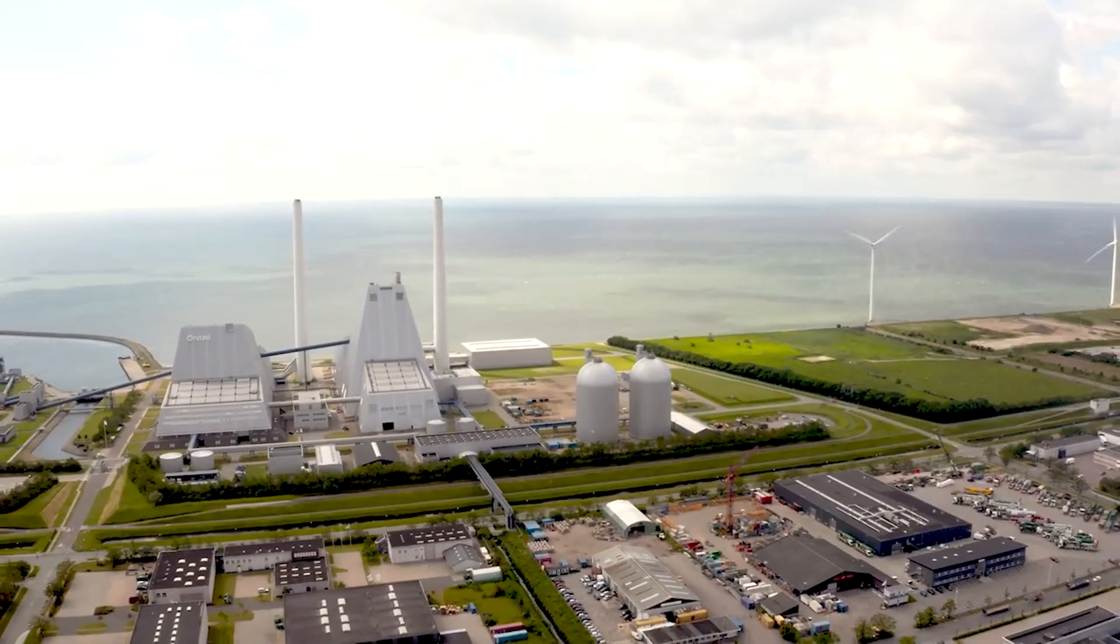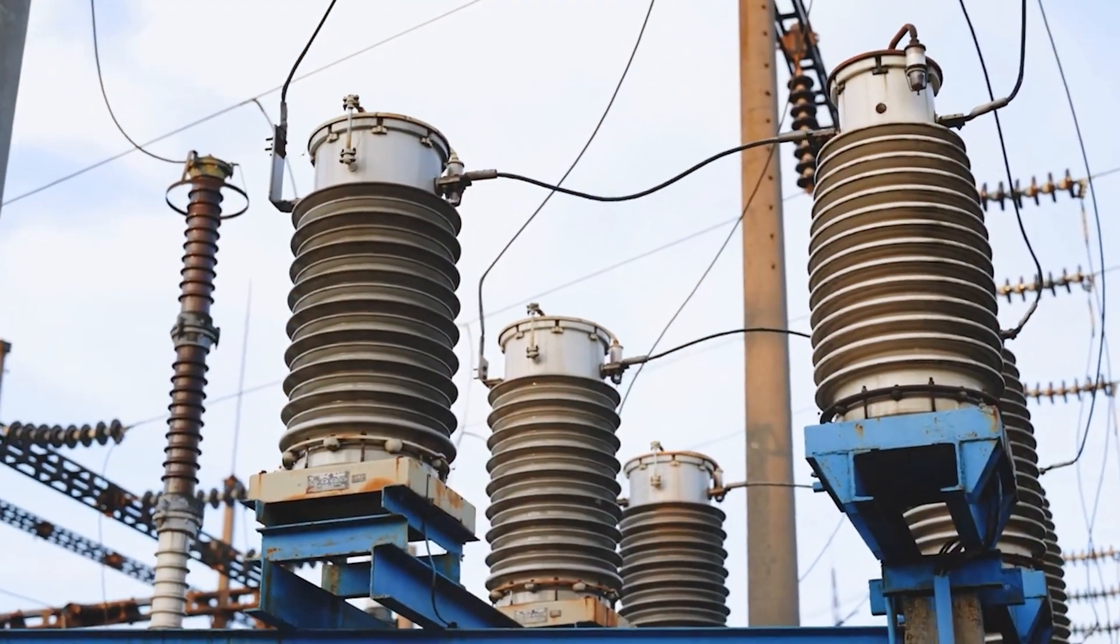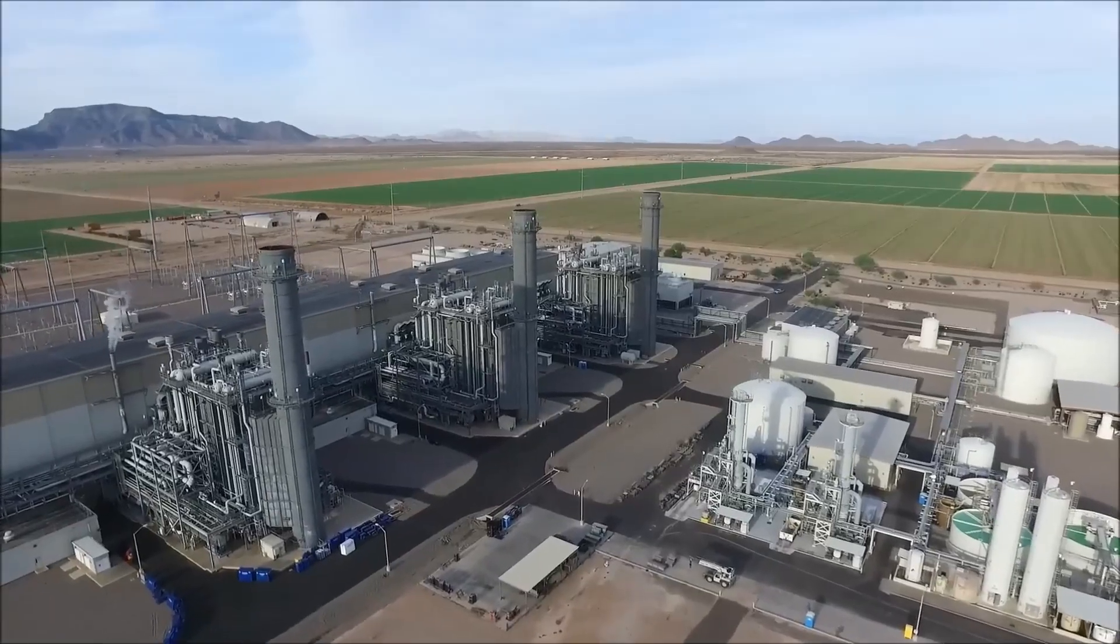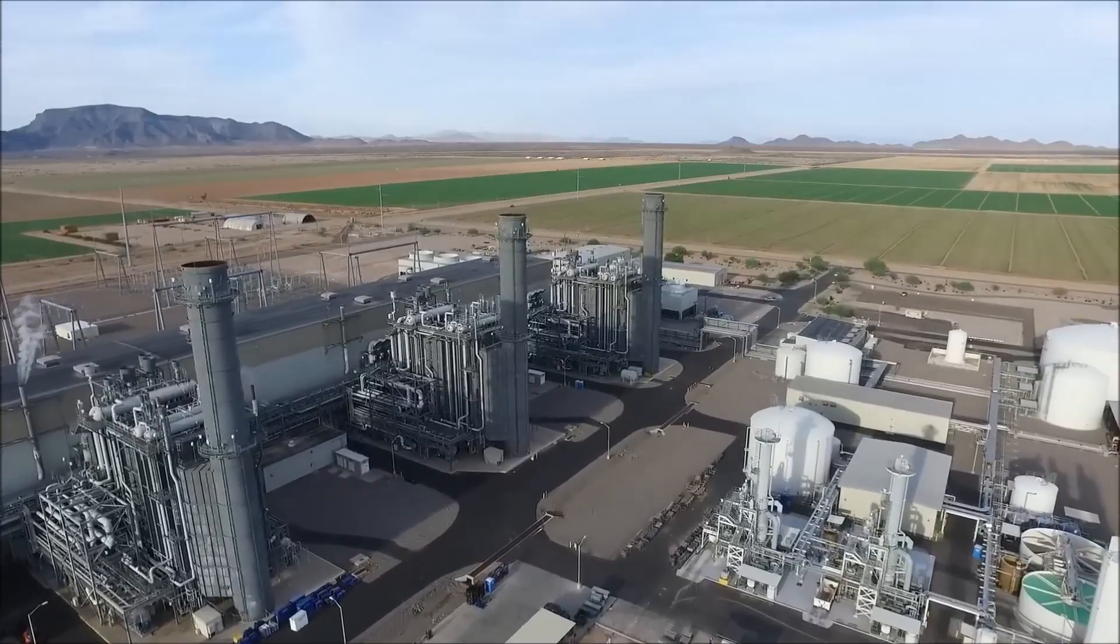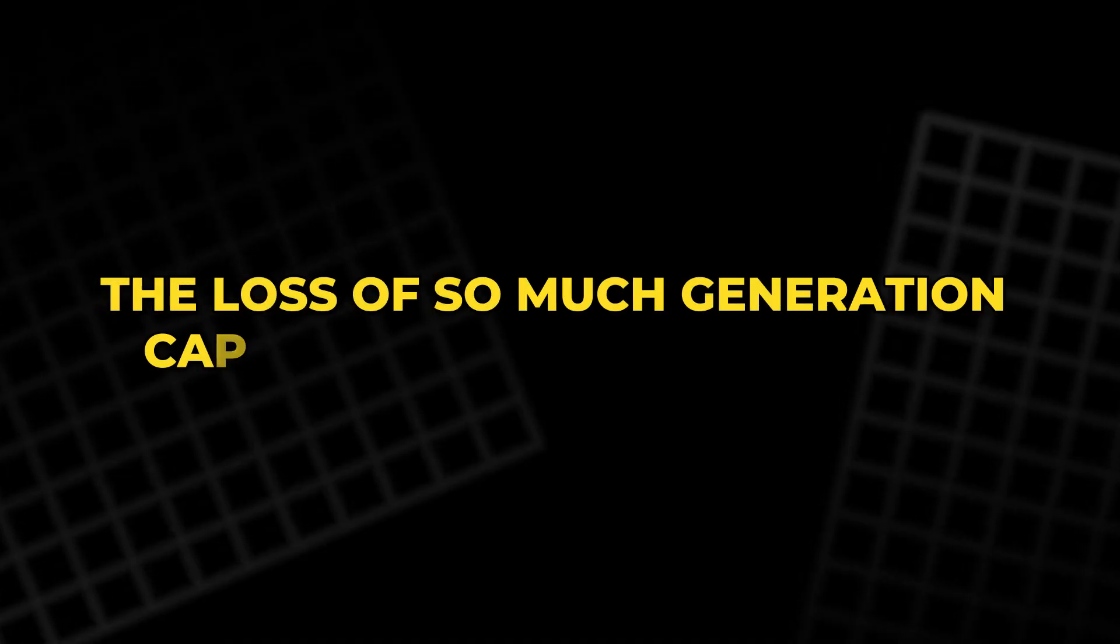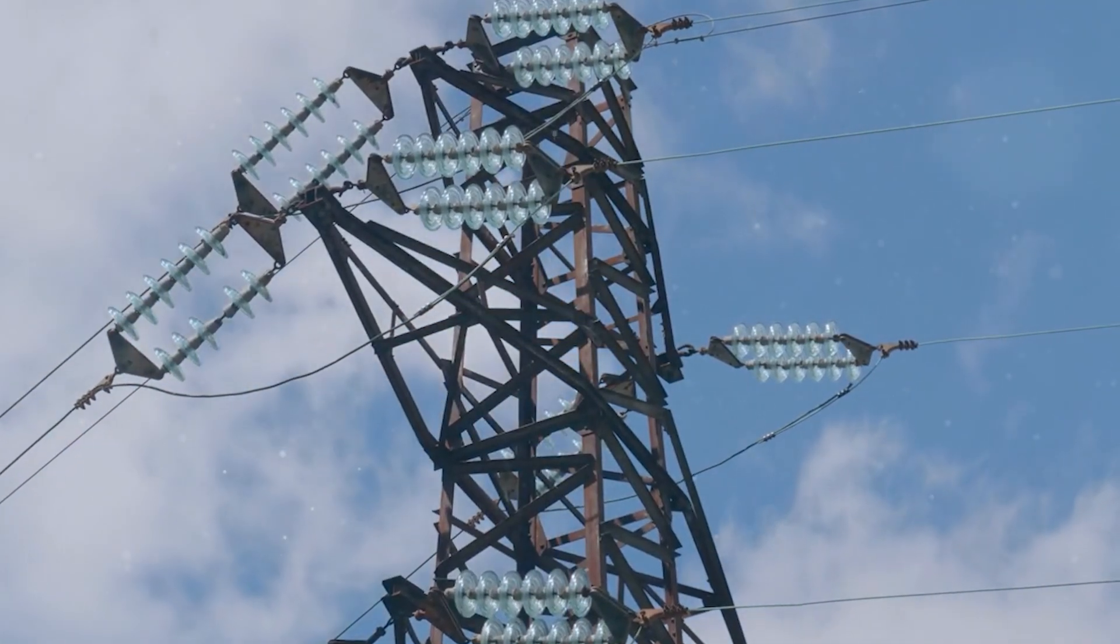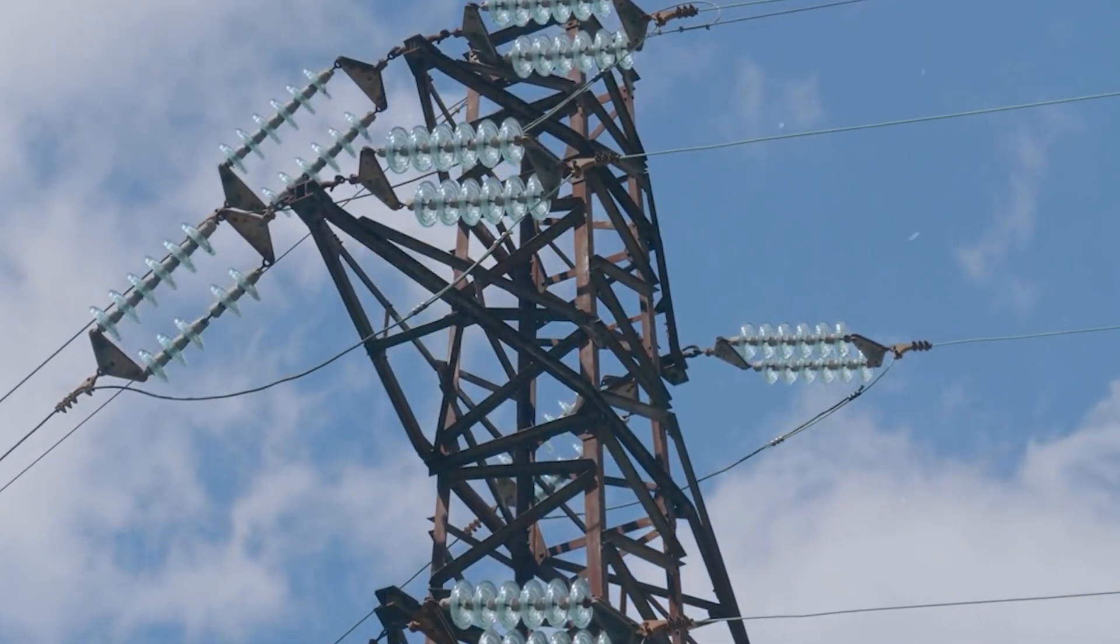The sudden drop in production from these solar facilities caused the system frequency to dip to 59.7 hertz, a point dangerously close to triggering an emergency response. The loss of so much generation capacity in such a short time could have required rolling blackouts to bring demand and supply back into balance.